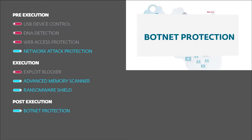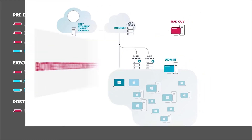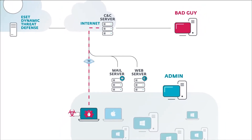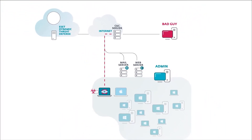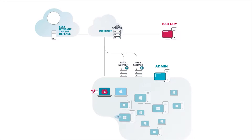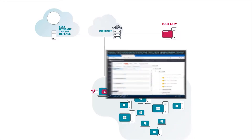If the botnet protection layer hadn't blocked that communication, the malware would download additional components. The first component, which we've seen attackers use for network reconnaissance before lateral movement, is NMAP. NMAP is a legitimate tool, in this case abused by the attacker, so as such it doesn't trigger a DNA detection by default. But the network scan is visible in ESET Enterprise Inspector.